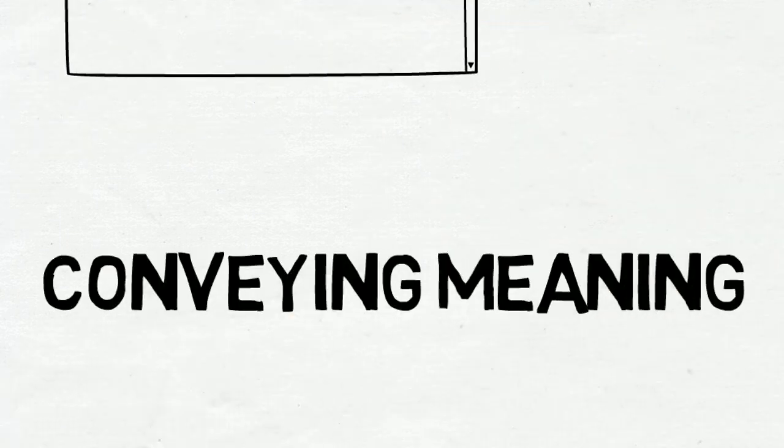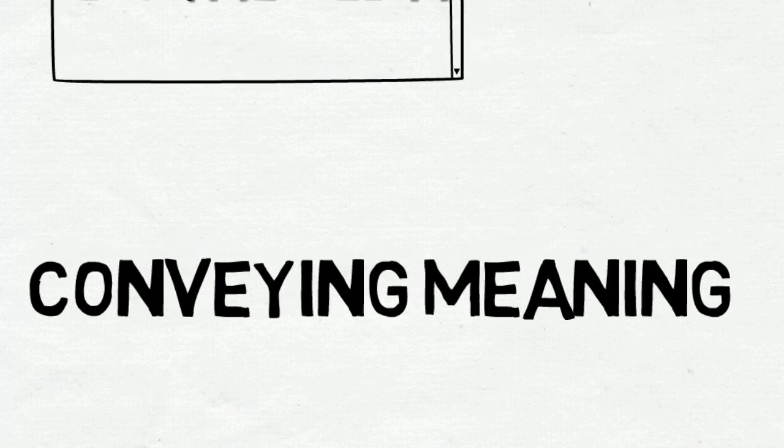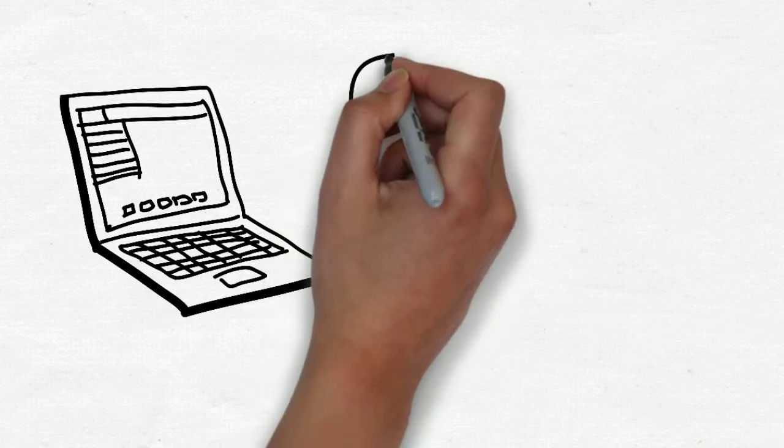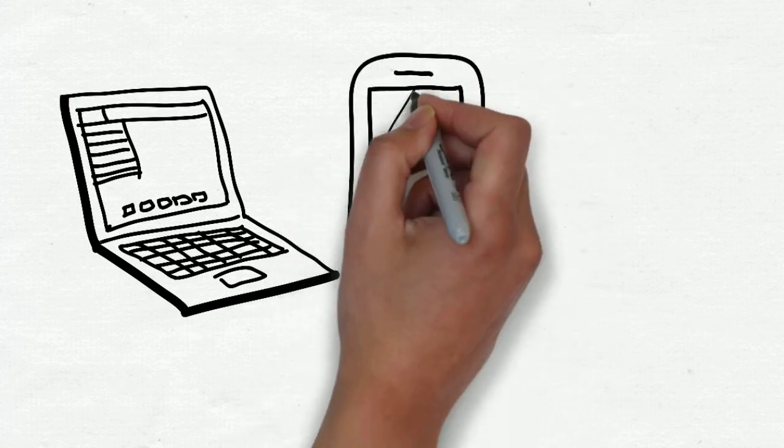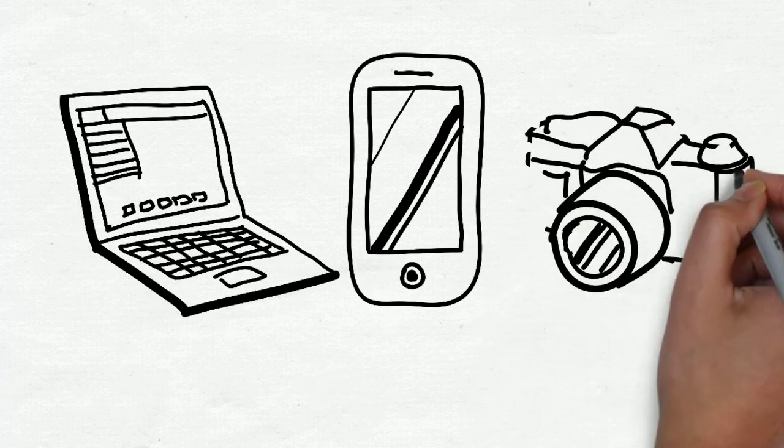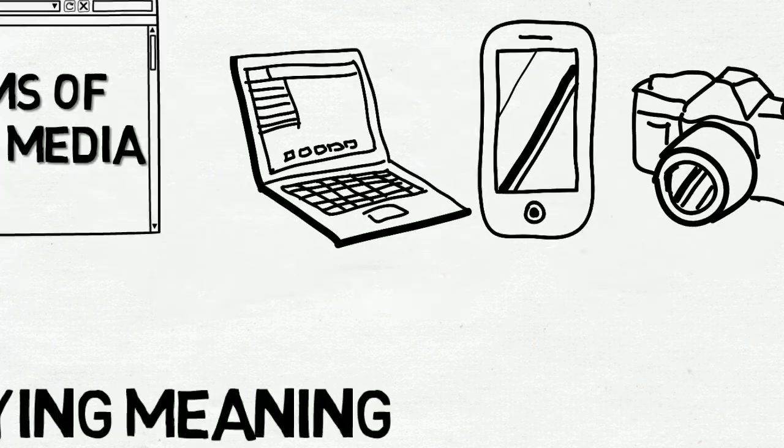Each of these five forms have particular affordances or special features for conveying meaning. And you can make them using your own technology, such as your own computer, using iMovie on a Mac or Windows Movie Maker on a PC, your own mobile phone and digital still camera.